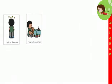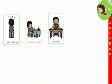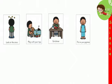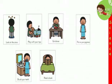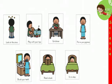Our friend Fadi wants to tell us about a nighttime routine that we can do: look at the stars, play with your toys, eat dinner, put on your pajamas, brush your teeth, read a book, and finally go to sleep.